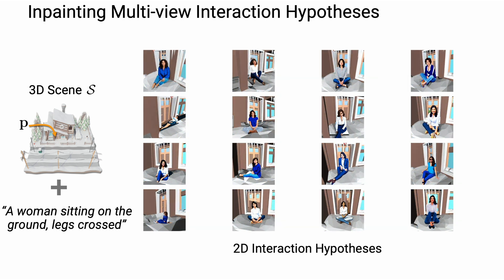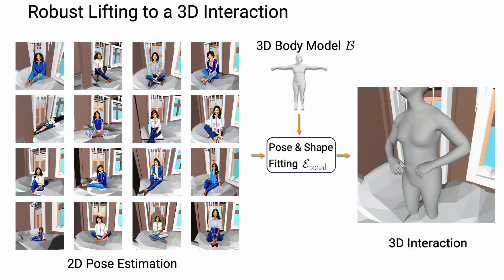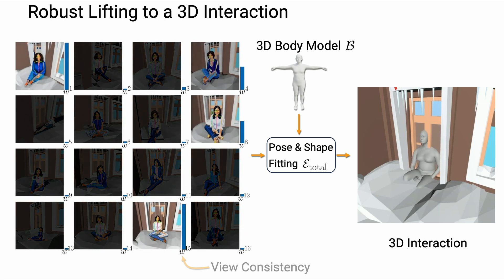From the inpainted 2D interaction hypotheses, we detect 2D poses using an off-the-shelf pose estimator. We then lift these 2D interaction hypotheses to 3D. We formulate a robust optimization, optimizing for a 3D human body model that is most consistent with the 2D pose guidance. The blue bars represent our optimizable view consistency scores.